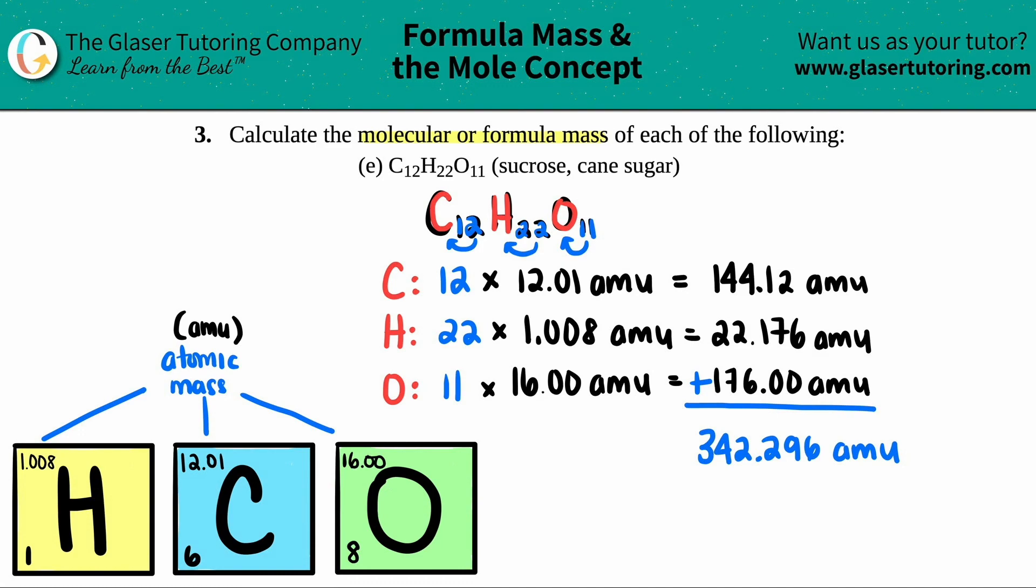If you wanted to do sig figs, let's see. The least number of sig figs after the decimal is 2. So technically, you could only have 2 spots here. So this 6 would round the 9 up to a 10, which means that the 2 would go to a 3. So technically, if you are doing sig figs, it would be 342.30. But I'm just going to leave the other answer here for now. And that's it. So 342.296 AMUs, that is the molecular or the formula mass for sucrose, aka the sugar we use in baking, cane sugar.